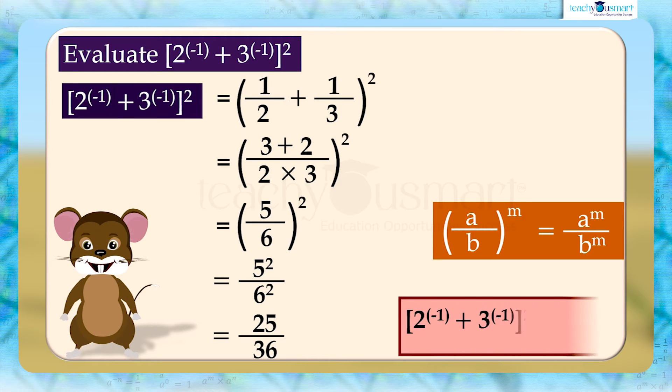That is, 2 raised to minus 1 plus 3 raised to minus 1, the whole square, equals 25 by 36.